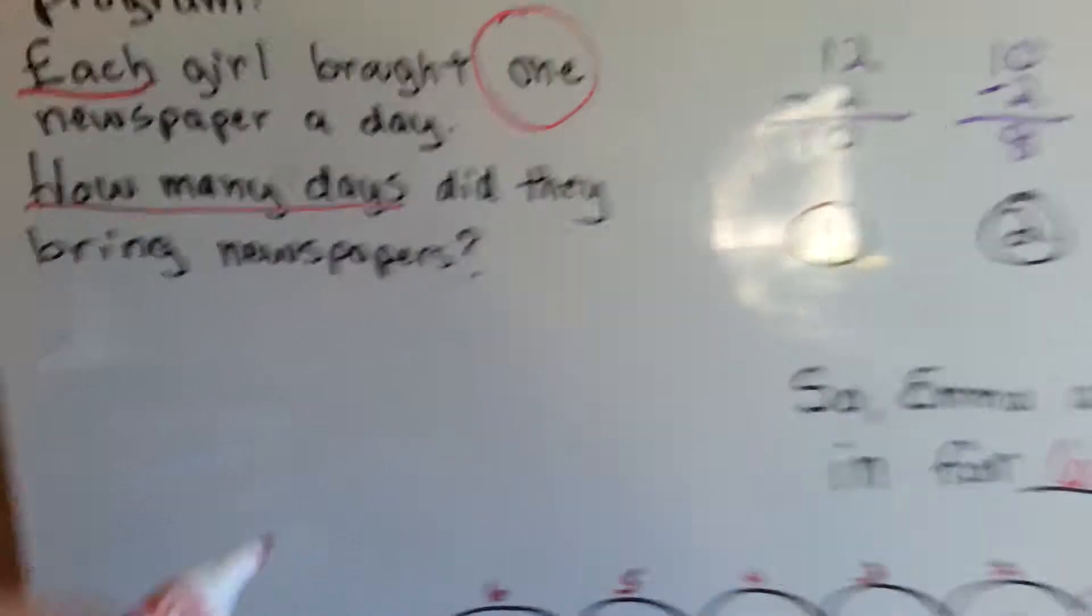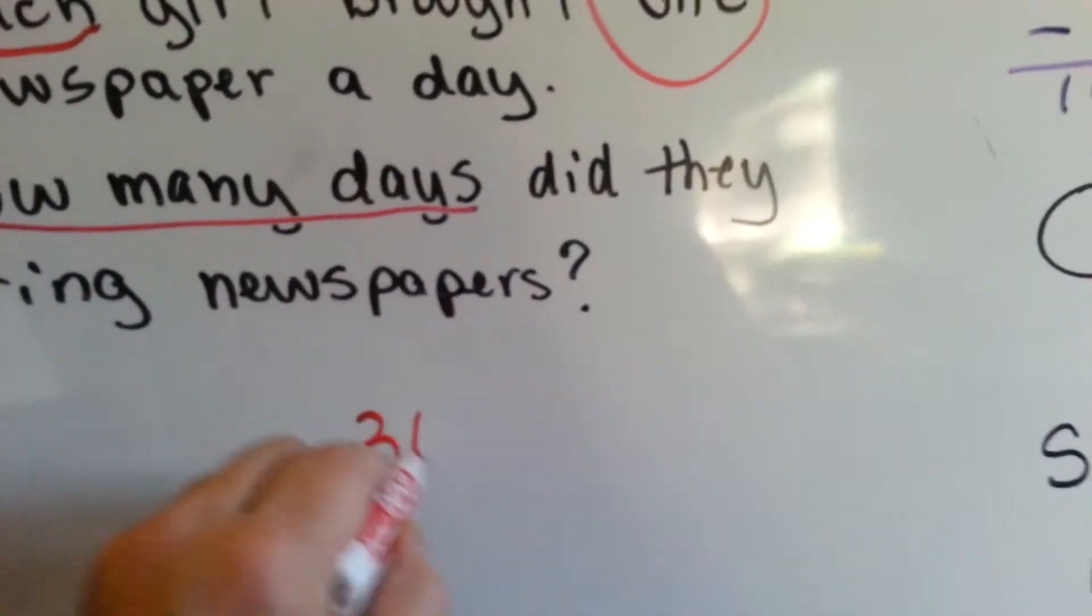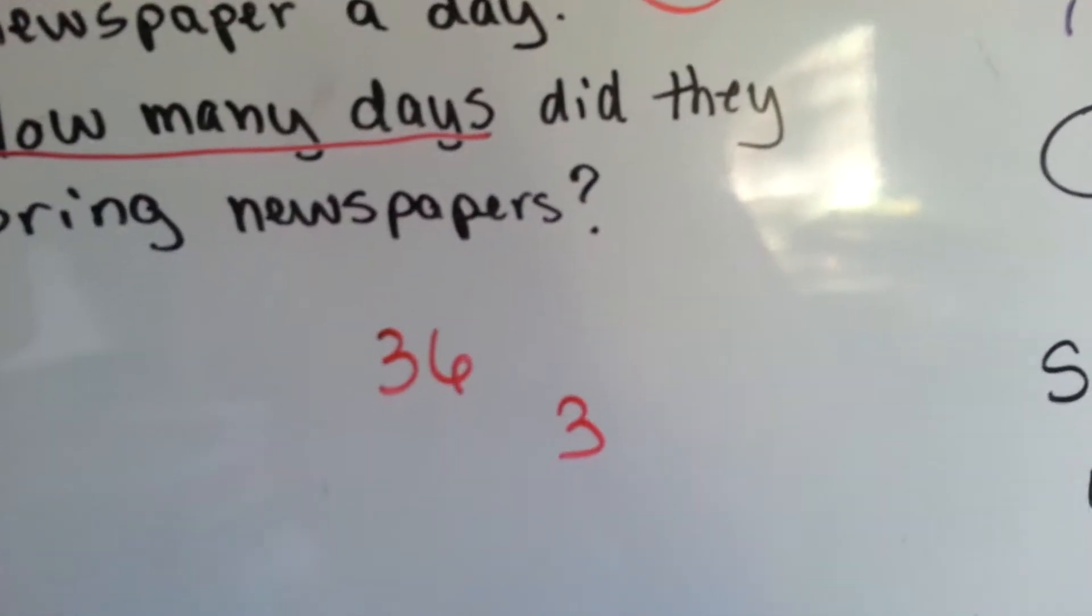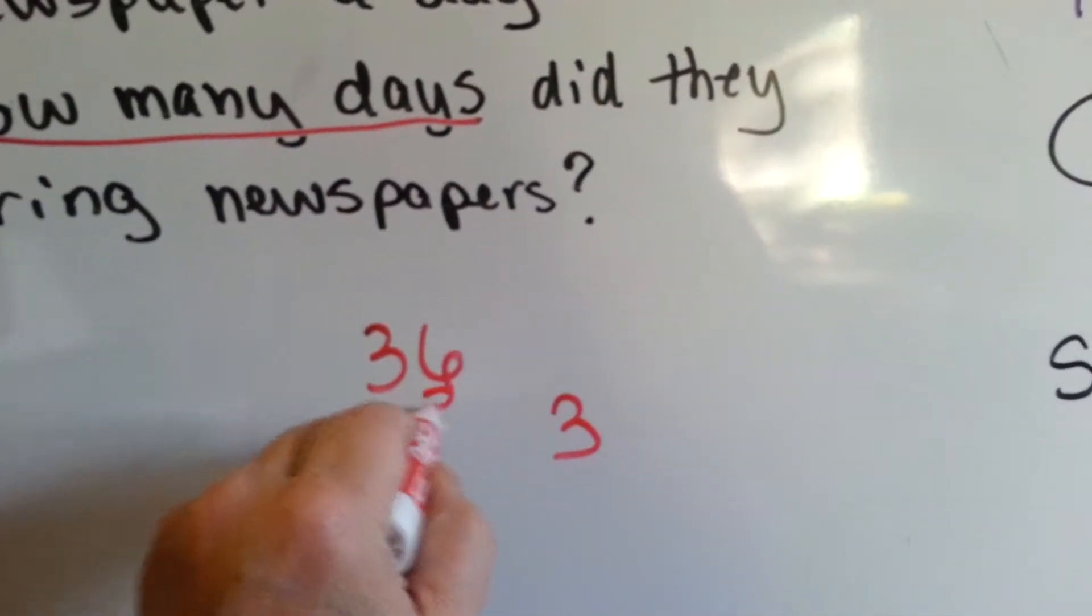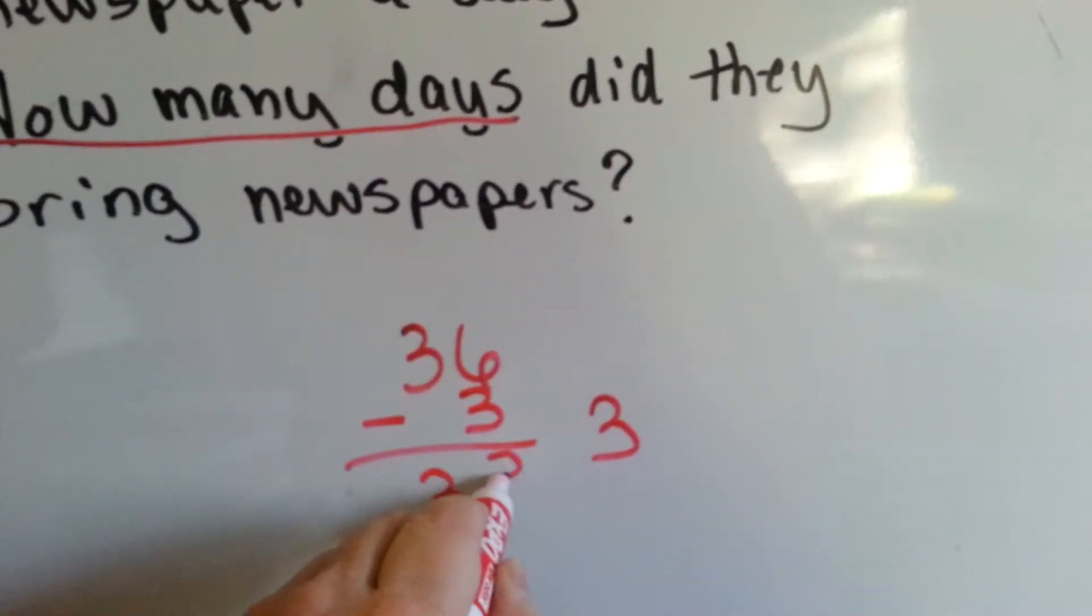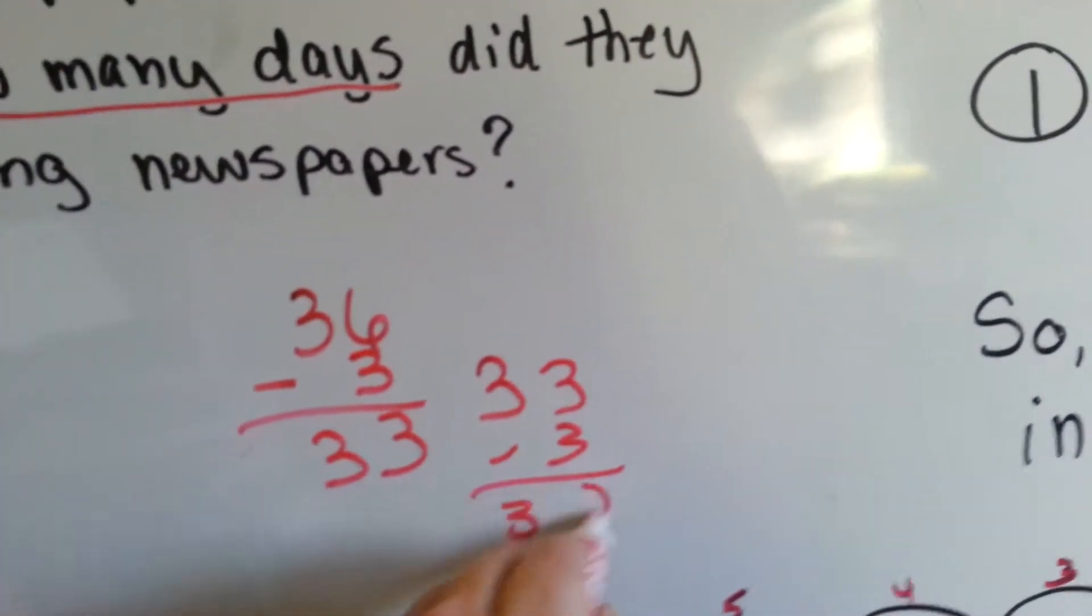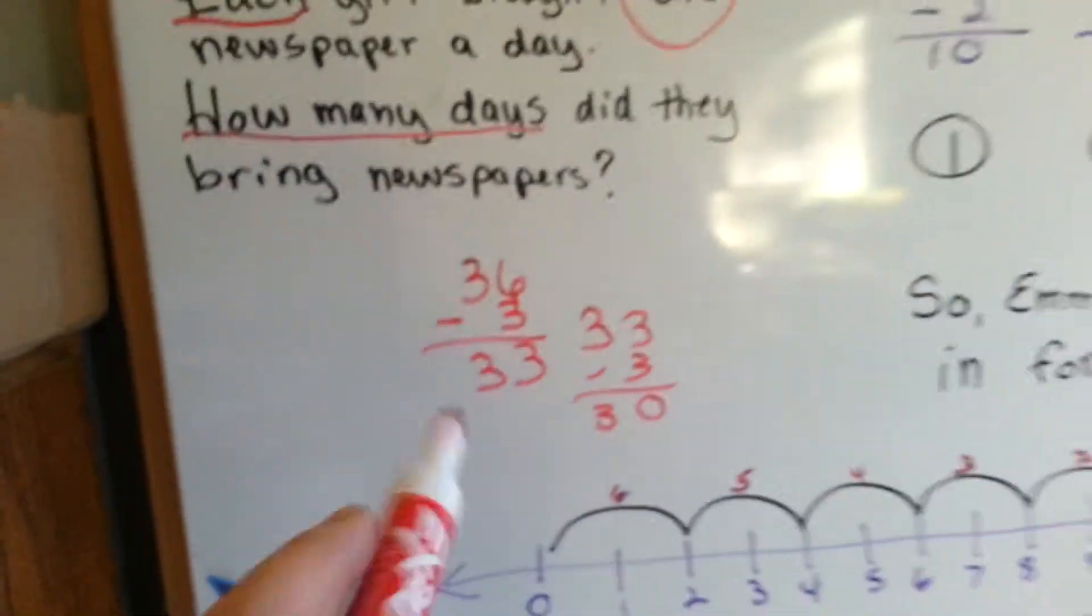So, if you have a bigger number, like 36, and you had three people bringing them in, then you would just subtract three over and over and over again until you got to zero. And then you would count how many times you subtracted.